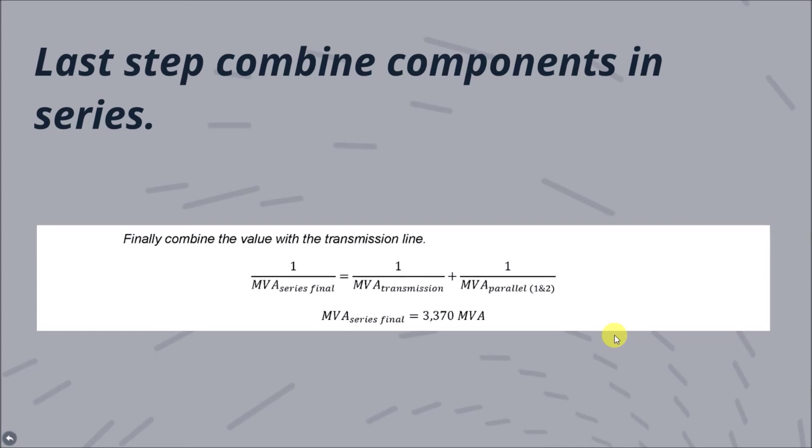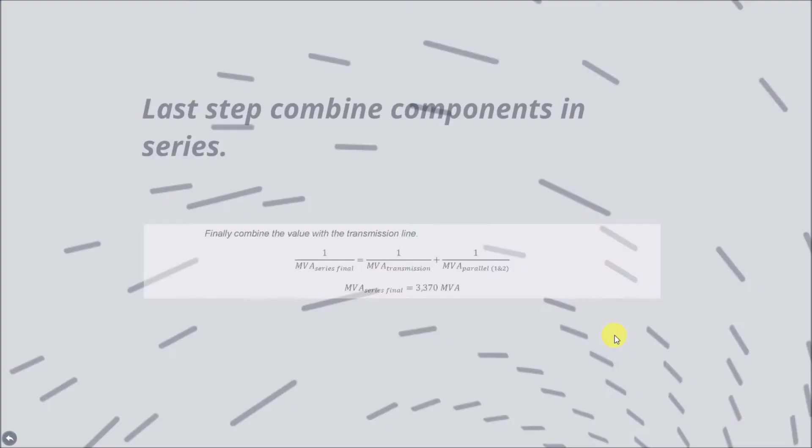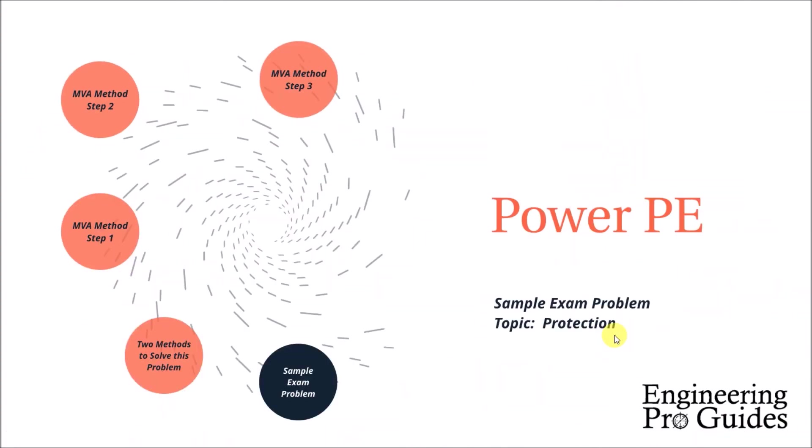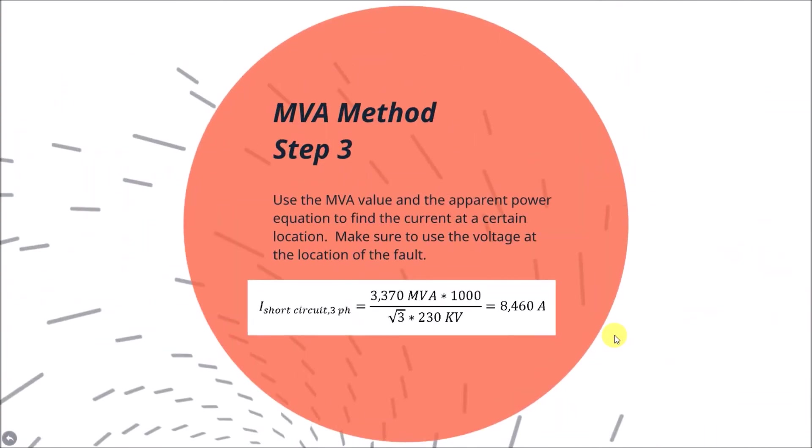Then combine these two circuits in parallel. Notice that parallel lines provide additional paths for short-circuit current to flow, which will increase the MVA short-circuit value.